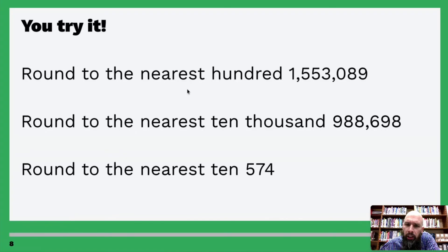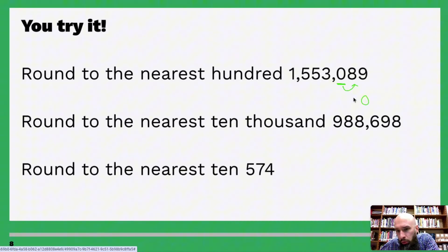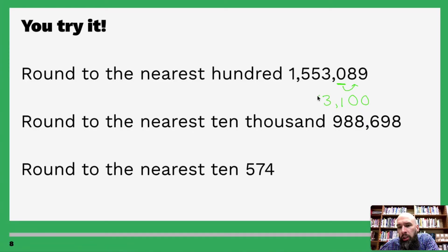Round to the nearest hundred — ones, tens, hundreds. Underline the zero, go to the right — five or above, give it a shove! So we're going to turn eight and nine into zero, and zero gets shoved up to one. All the numbers before stay exactly the same.